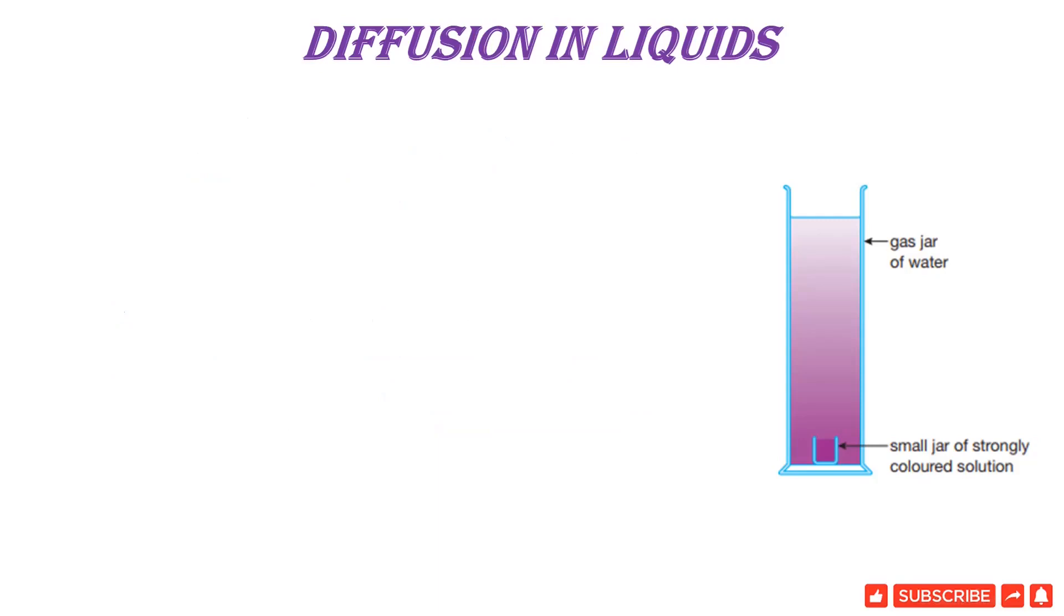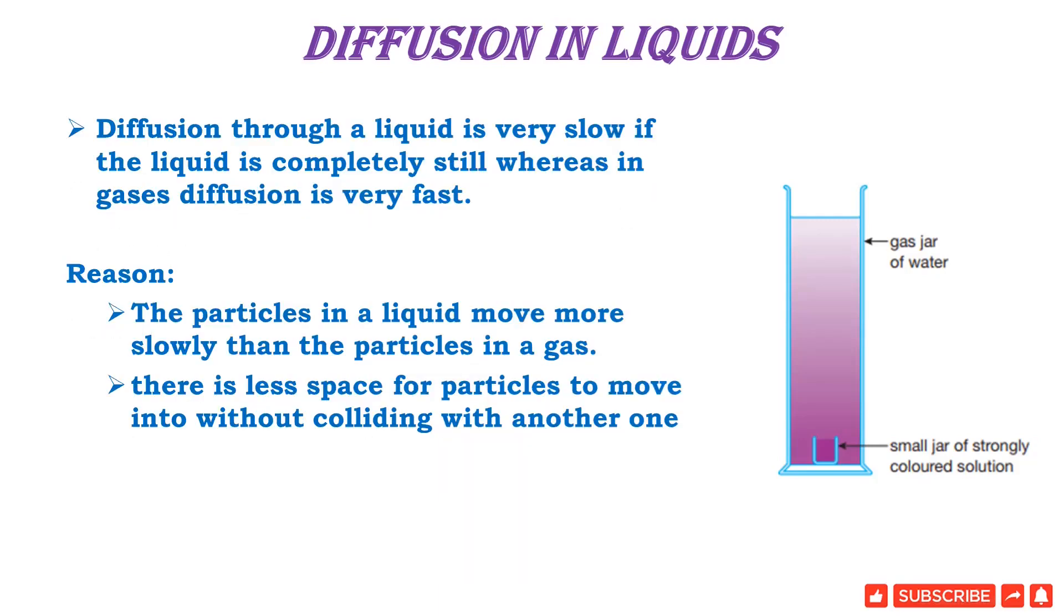Diffusion in liquids. Diffusion through a liquid is very slow if the liquid is completely still, whereas in gases diffusion is very fast. The reason is the particles in liquid move more slowly than particles in gas, and there is less space for particles to move into without colliding with each other.